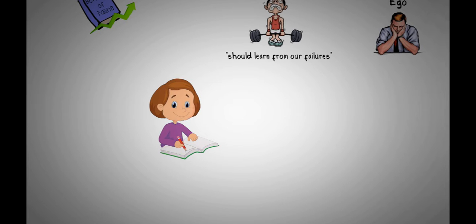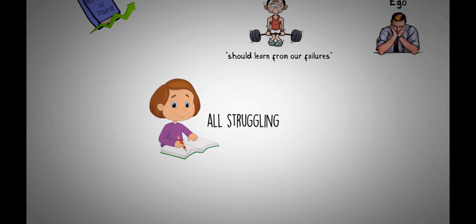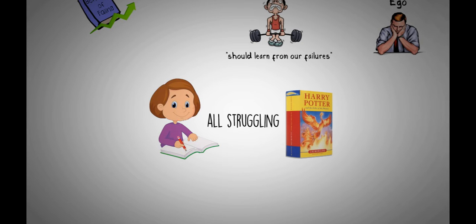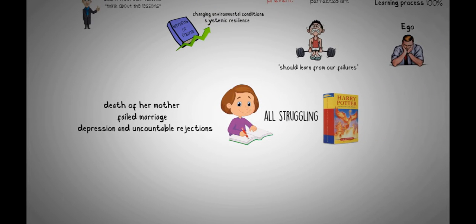For Rowling, her failure came in the form of having to deal with the numerous setbacks she had while struggling to complete the first book of Harry Potter. She had to deal with the death of her mother, a failed marriage with a baby daughter to feed, depression, and uncountable rejections by publishers, all while living on welfare support.